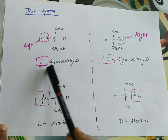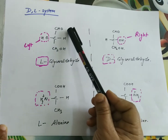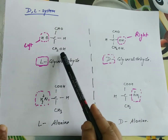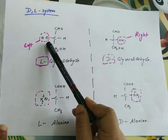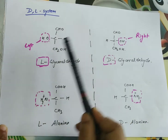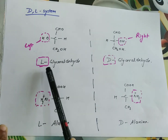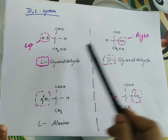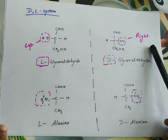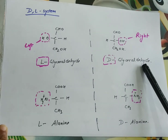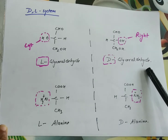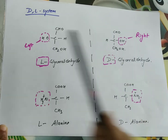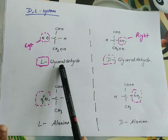L-glyceraldehyde is a three-carbon sugar with CHO at one end and CH2OH at the other end, with OH on the left and H on the right. When OH is present on the left side, it is called L-glyceraldehyde. In the mirror image, when OH is present on the right side, it is called D-glyceraldehyde. So in glyceraldehyde, OH on the right is D, and OH on the left is L.